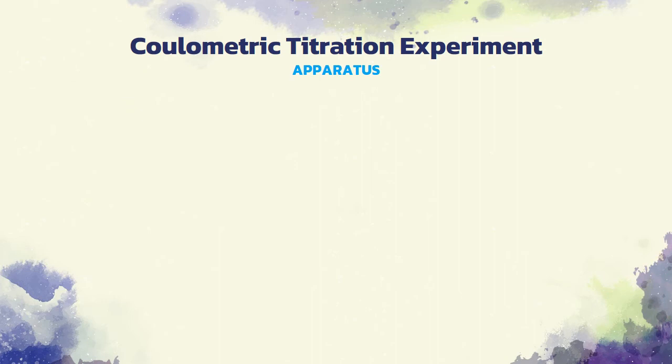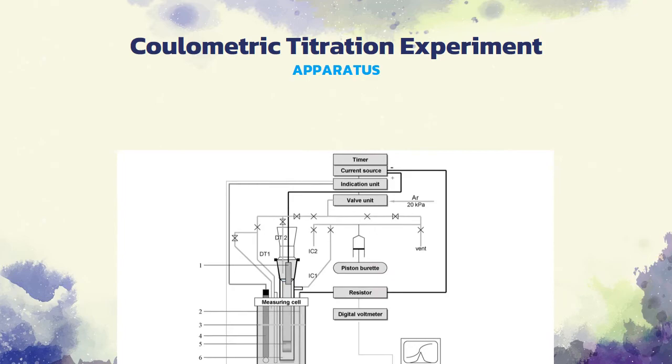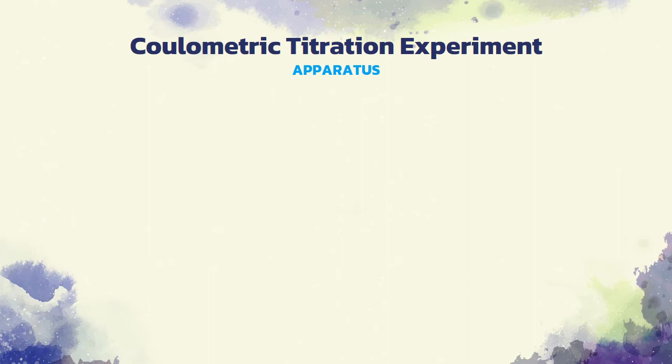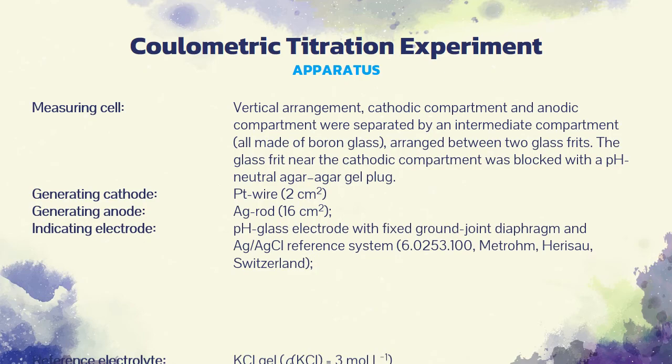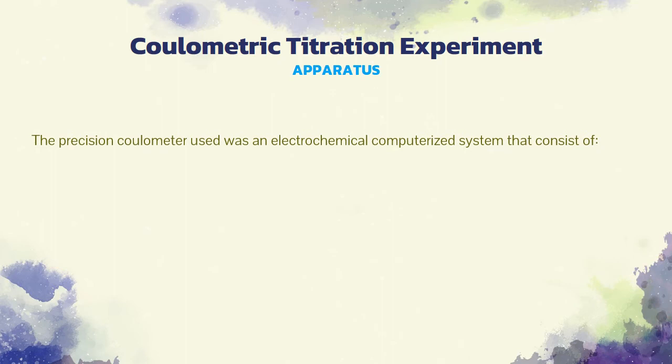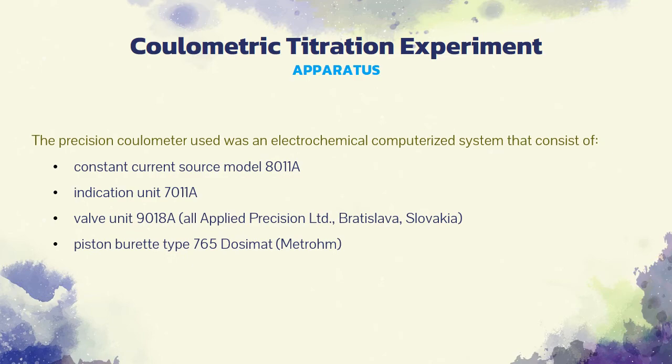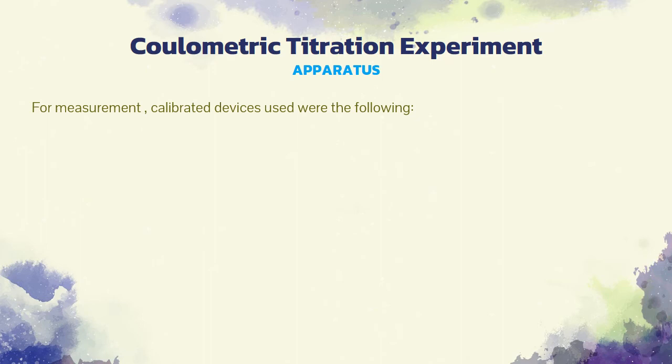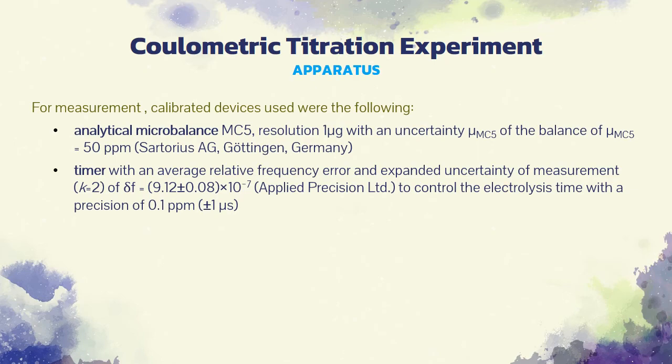For the coulometric titration experiment, the determinations were carried out using the system given in figure 1. This system includes a titration cell with the following specifications. The precision coulometry used was an electrochemical computerized system that consists of a constant current source, an indication unit, a valve unit, and a piston burette. For the measurements, four calibrated devices were used. These include an analytical micro-balance, a timer, a multimeter, and a resistor.